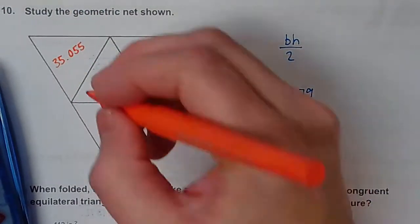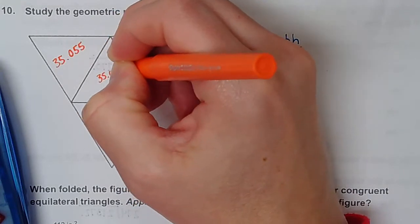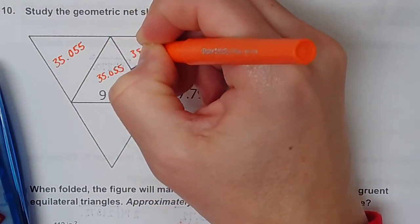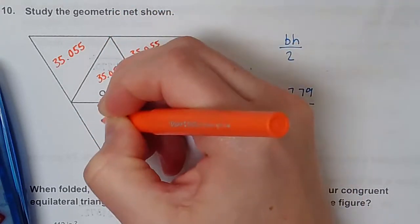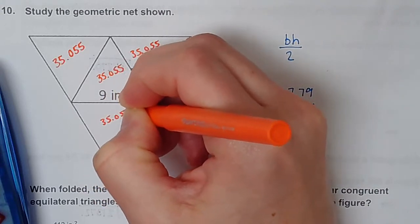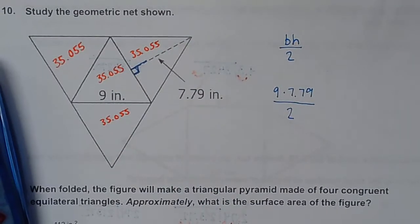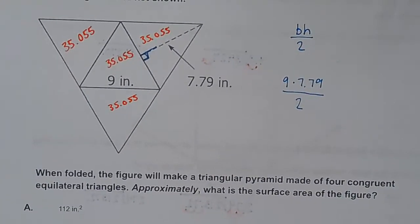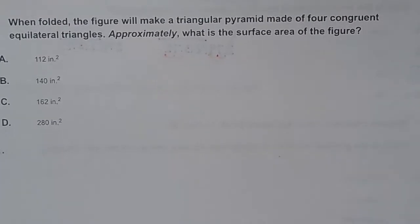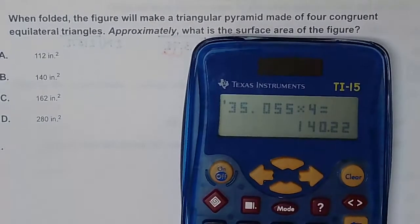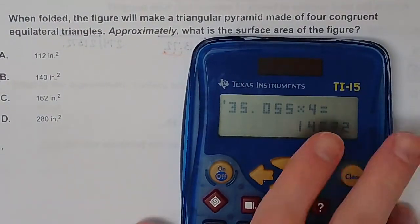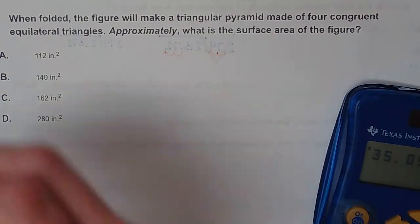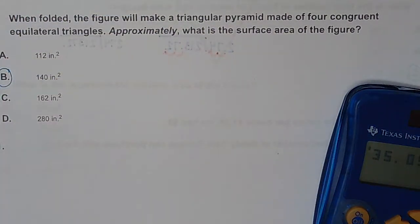So all of these are the same, so all of these would be this amount. Now on your calculator, all you need to do is times that by four because there's four of these triangles, and you get about, it says approximately, so it doesn't have to be spot on. On your calculator you'll see you get 140.22. So that is approximately 140 inches squared.